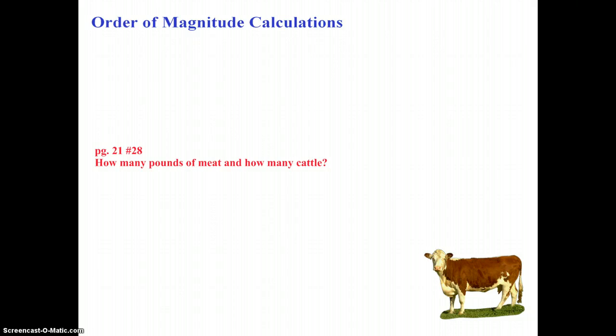You may want to jot this down. Order of magnitude simply stated is the power of 10 that a number is closest to. When we perform an order of magnitude calculation, we perform the calculation using only powers of 10, and this is done for estimation purposes. So order of magnitude is the power of 10 a number is closest to. An order of magnitude calculation is an estimated calculation that is performed using only powers of 10.